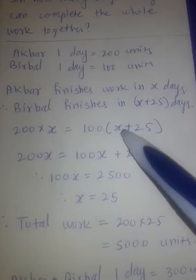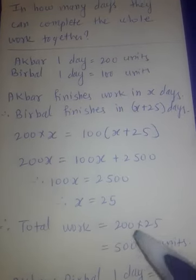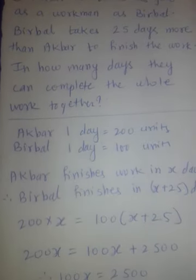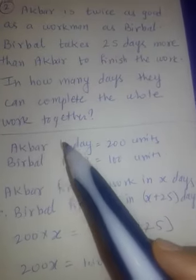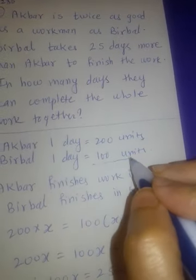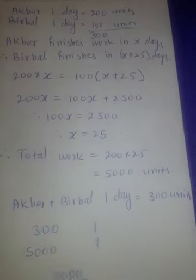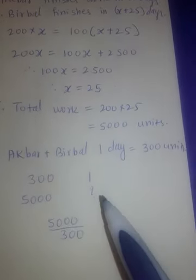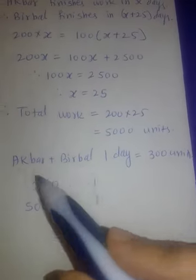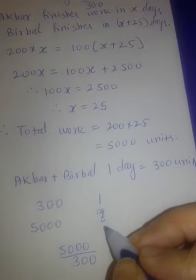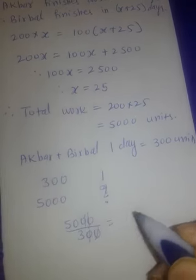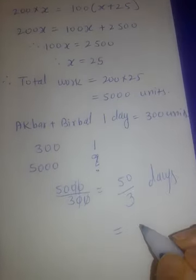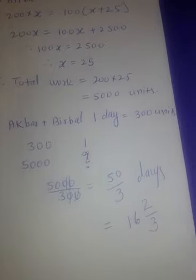Now for the question: in how many days will they complete the work together? Together Akbar and Birbal finish 200 + 100 = 300 units per day. Total work is 5000 units. So days required = 5000 ÷ 300 = 16 and 2/3 days. You can also convert it to a mixed number: 16⅔ days. You need to be fast in this conversion — please practice it, as slow conversion will slow down your exam speed.